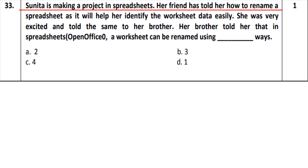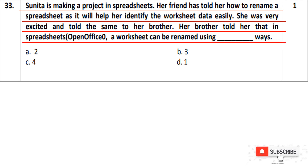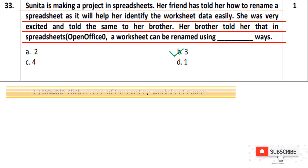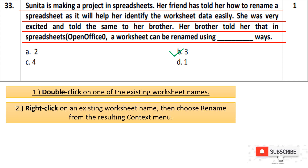Question number 33: Sunita is making a project and her friend told her how to rename a spreadsheet. When we create a spreadsheet, renaming it helps us work easily. There are three ways to rename a worksheet. First, double-click on your worksheet tab and rename it. Second, right-click on your worksheet tab and choose the Rename option, then type the new name.